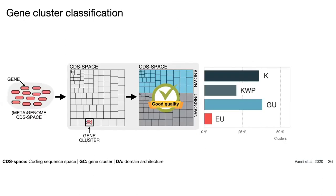In the end, the gene clusters were partitioned into four categories. We retrieved our known set of clusters annotated to known domain architectures, then the knowns without PFAM as clusters annotated to characterized proteins in the search databases, then the genomic unknowns annotated to hypothetical proteins or PFAM domains of unknown function, and finally the environmental unknowns — the set found with no homologies in any of the search databases.